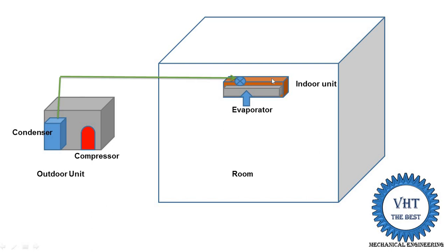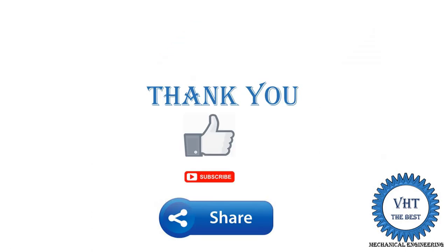The split air conditioning system is available in capacities of 1 ton, 3 ton, 5 ton, 7 ton, and 8 tons, making it suitable for various applications. Thank you for watching this video — if you learned something, please like the video, subscribe to the channel, and share with your friends.